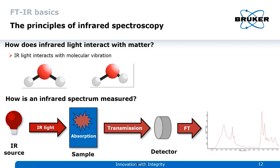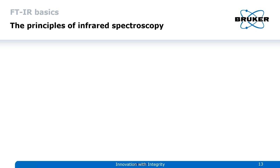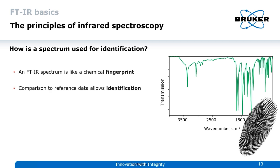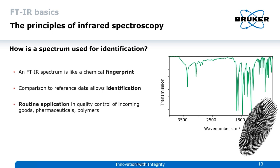This is a polyamide example spectrum. An FTIR spectrum is like a chemical fingerprint — unique for every individual compound and polymer type — so we can compare it to a reference database and identify materials. This is done in routine applications and quality control, for example for incoming goods, pharmaceuticals, and polymers. When we combine microscopy with identification, we can also identify microplastics.